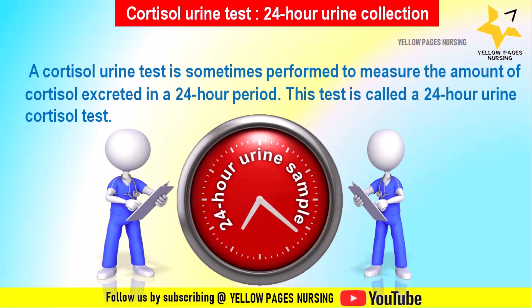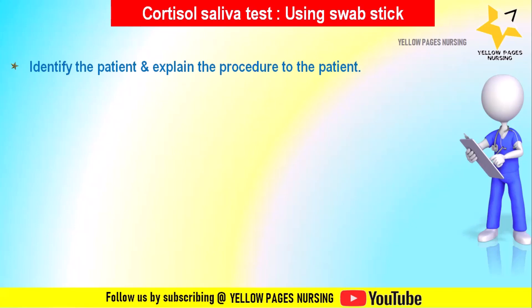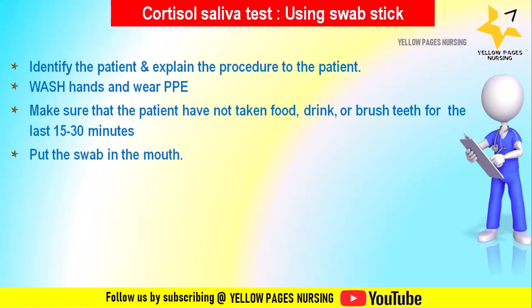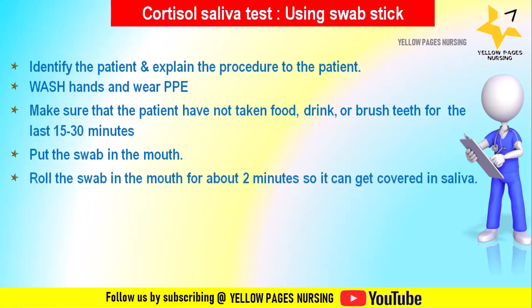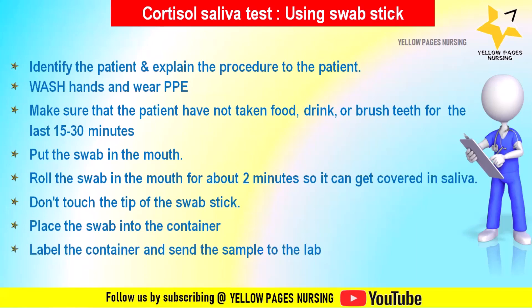The cortisol saliva test is performed using a swab stick. It is a diagnostic test that measures the level of cortisol in saliva — a non-invasive and convenient method for assessing cortisol levels. The procedure: identify and explain the procedure to the patient; wash hands and wear appropriate PPE; ensure the patient has not taken food, drink, or brushed their teeth for the last 15 to 30 minutes; place the swab in the mouth and roll it for about two minutes so it becomes covered in saliva; do not touch the tip of the swab stick; then place the swab into the container, label it, and send the sample to the lab.